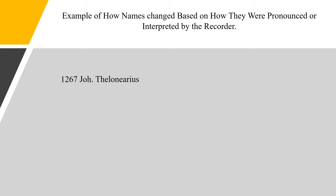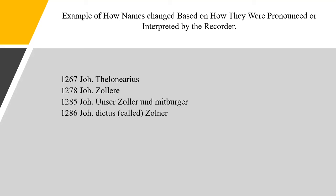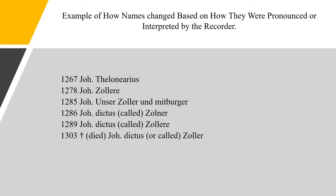In 1267, this person's name was recorded as Johann Theloniarius. In 1278, it was again Johann Theloniarius. In 1285, it was recorded as Johann, our Theloniarius and fellow citizen. In 1286, it was changed to Johann dictus, meaning called Theloniarius. In 1289, it repeated the name of Johann called Theloniarius. And in 1303, his death record gave his name again as Johann called Theloniarius.